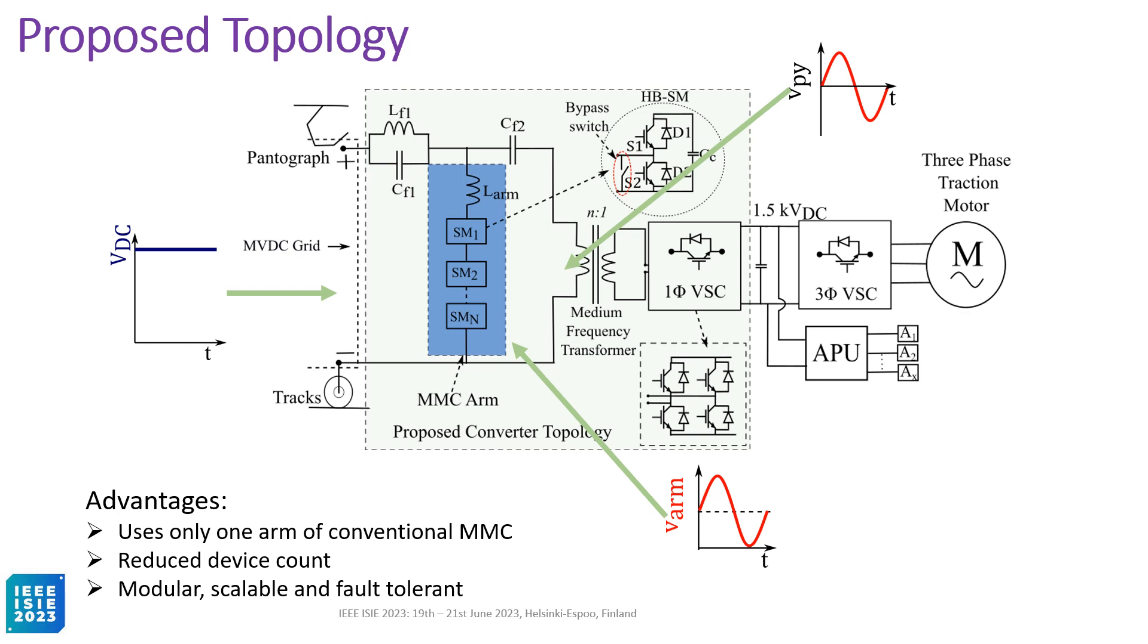The parallel LC filter is tuned at medium frequency to oppose the flow of AC component through it. And the series C filter opposes the DC component flowing into the transformer.